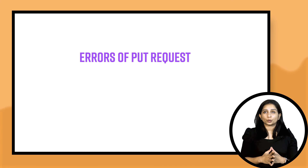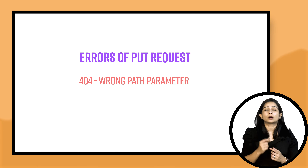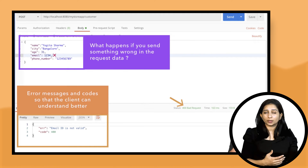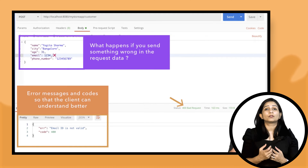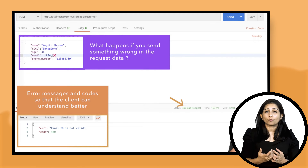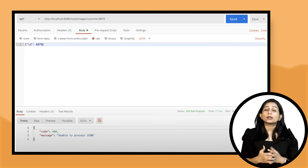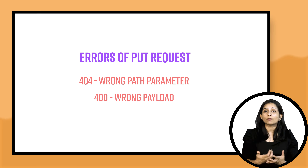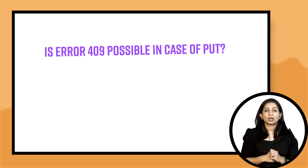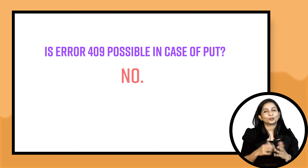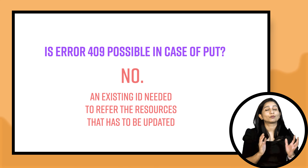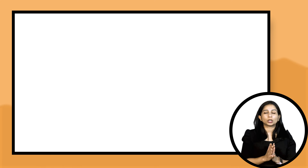Coming to the errors of PUT request: if you use a path parameter with an ID that doesn't exist, you will get a 404 in response. If you send any invalid attribute — like an empty phone number, a string for a phone number, or an invalid email ID — you will get the same errors as in POST: a 400 Bad Request with details about the invalid email or phone number. As for 409, you will not get that in case of PUT request, because you're using an ID that already exists on the server side and you're trying to update it.